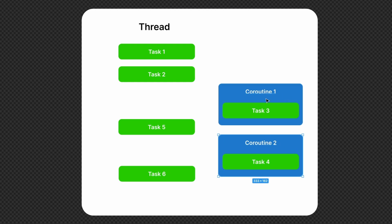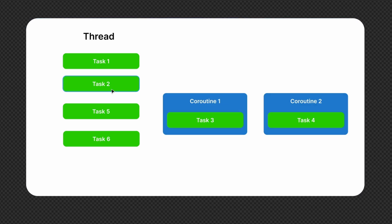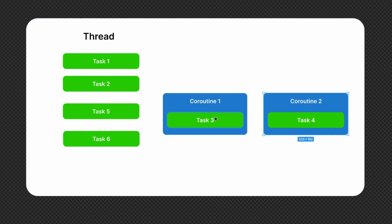These coroutines are independent of each other, so we can have two coroutines running at the same time. For example, when a user clicks a button and we need to get some data to display, we might fetch it from an API or a database or both. We can run both tasks in different coroutines at the same time — one coroutine does not wait for the other. They are independent of each other and they both don't block the sequence of tasks in our main thread.